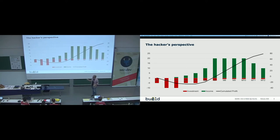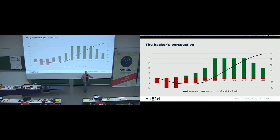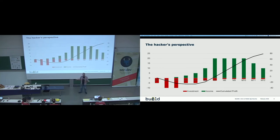This is how an attack would look from a hacker's economic perspective. At the beginning, he's investing time and resources trying to find an exploit — actually losing money during the first months of research. At some point he manages to get an exploit, make it work, deploy it, and he starts earning money. He can then infect hundreds, thousands, millions of users and get a lot of revenue out of this exploit. That's the ideal scenario for them.